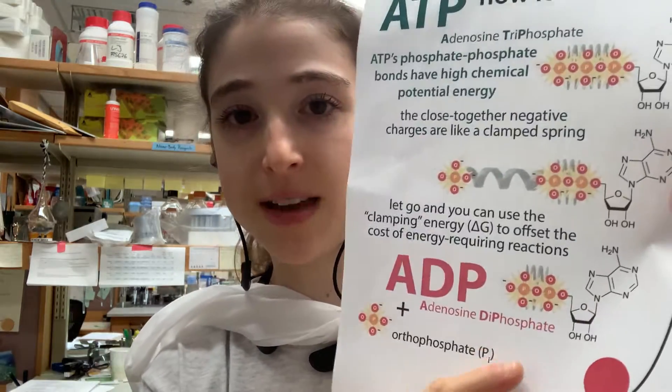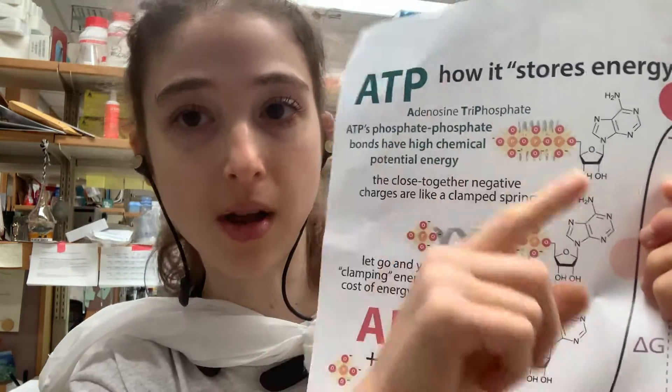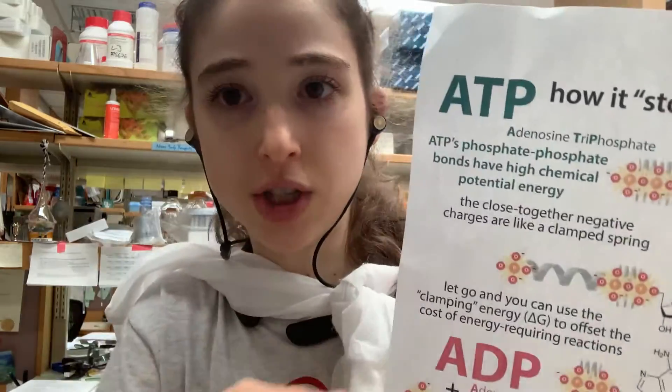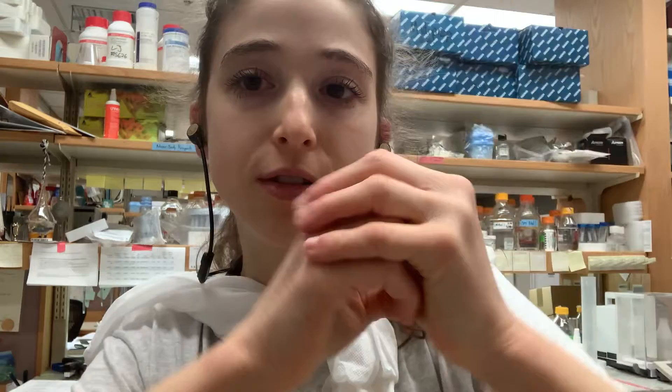To take a molecule of ADP — adenosine diphosphate — and put a phosphate group on the end takes energy, because those molecules don't want to be together. They're negatively charged, they hate each other, and here you are forcing them to be next to each other. But that allows you to store energy in this form, and then it can be spent no matter where that energy originally came from — it becomes the same ATP.